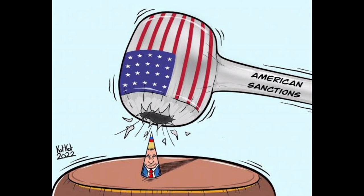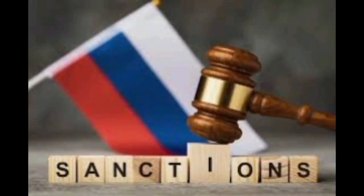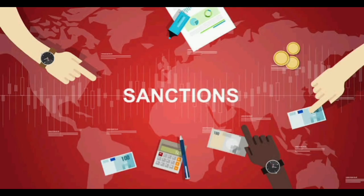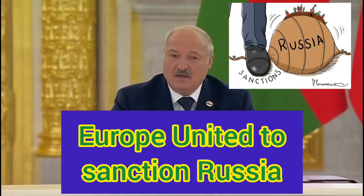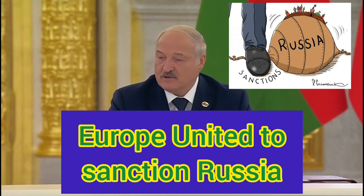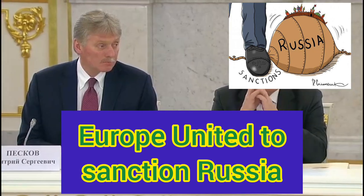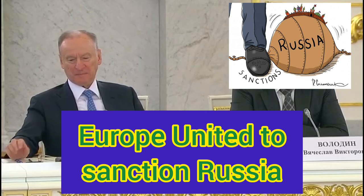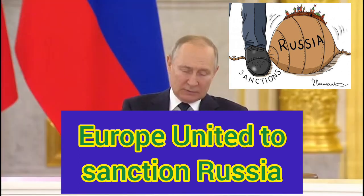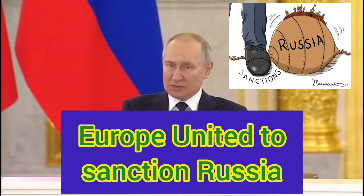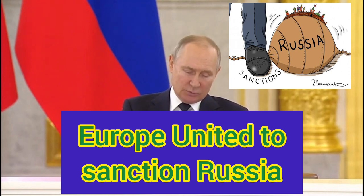Economic sanctions can be defined as the withdrawal of customary and financial relations for foreign policy and security policy purposes. They may be comprehensive or targeted. They are comprehensive when an entire country ends economic ties with a long-standing partner. They are targeted when transactions with particular business groups or individuals are blocked. National governments and international bodies such as the United Nations and the European Union mostly impose economic sanctions to deter, punish or shame entities that endanger their interests or violate international norms. They are usually aimed to accomplish foreign policy goals.